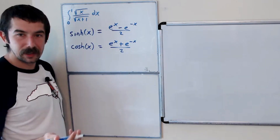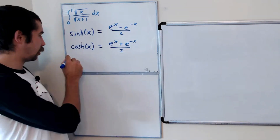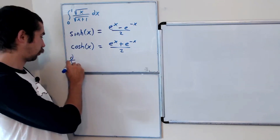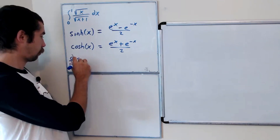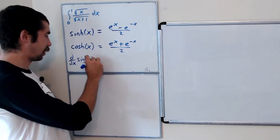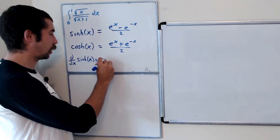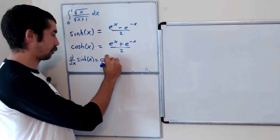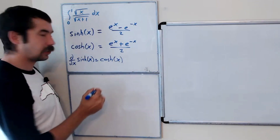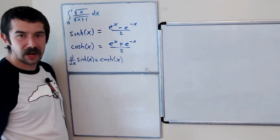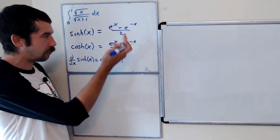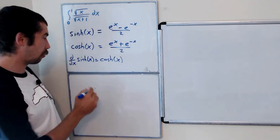Something to note: the derivative of sinh(x) is equal to cosh(x), and the derivative of cosh(x) is equal to sinh(x). You can verify that on your own.